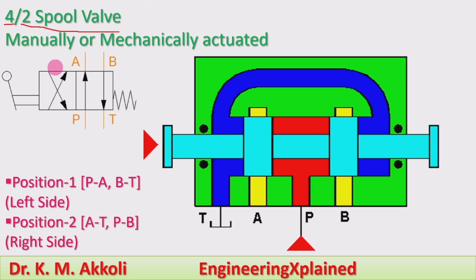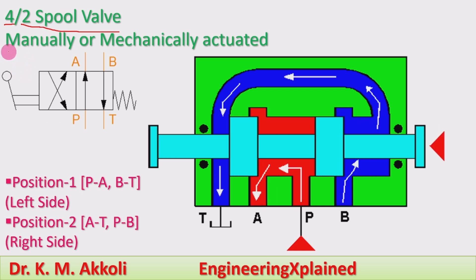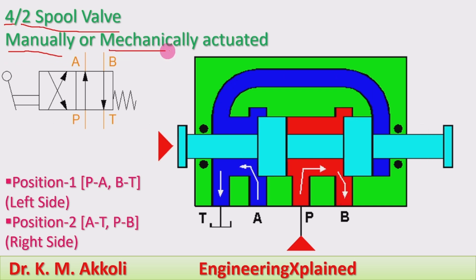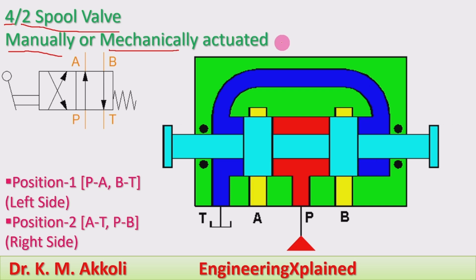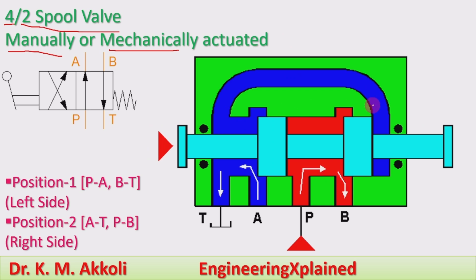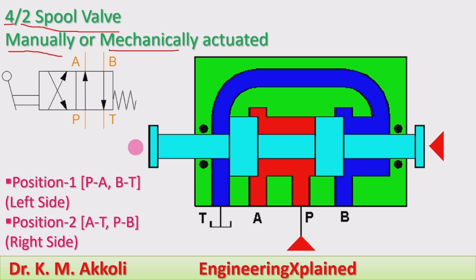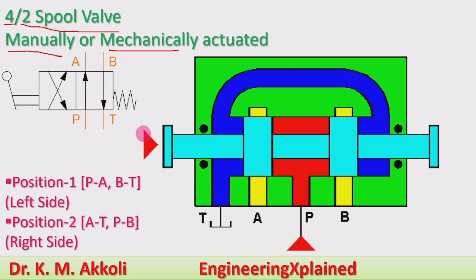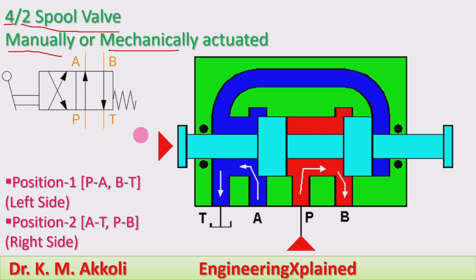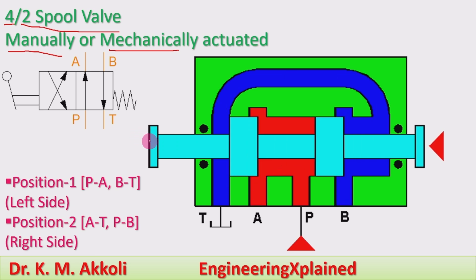The 4 by 2 spool valve I am taking here is manually actuated, also called mechanically actuated. We are not going to use any external force — just a push button or lever operated by hand to control the spool.